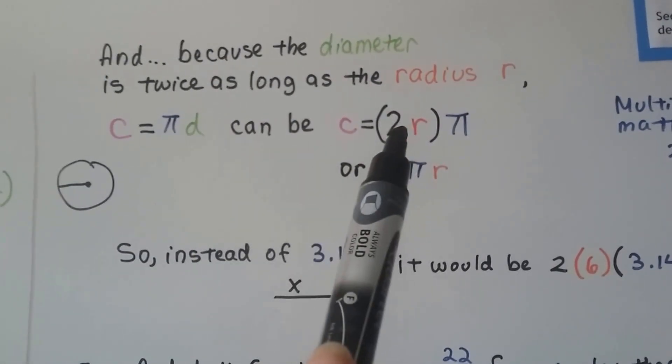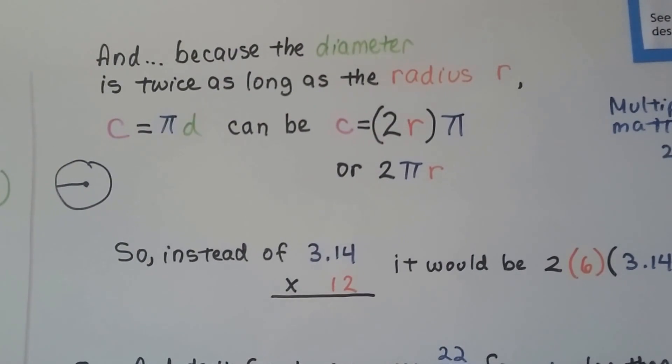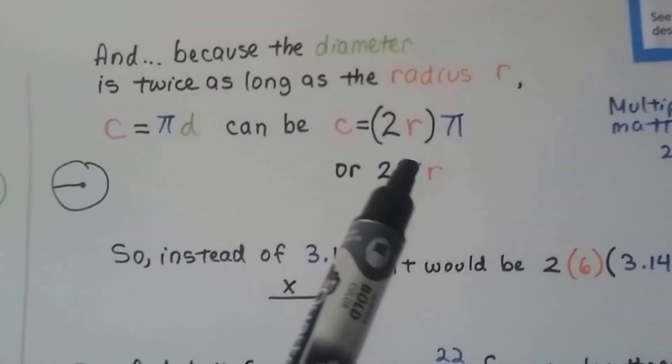And instead of d, we use two radii. We can even say 2 pi r.